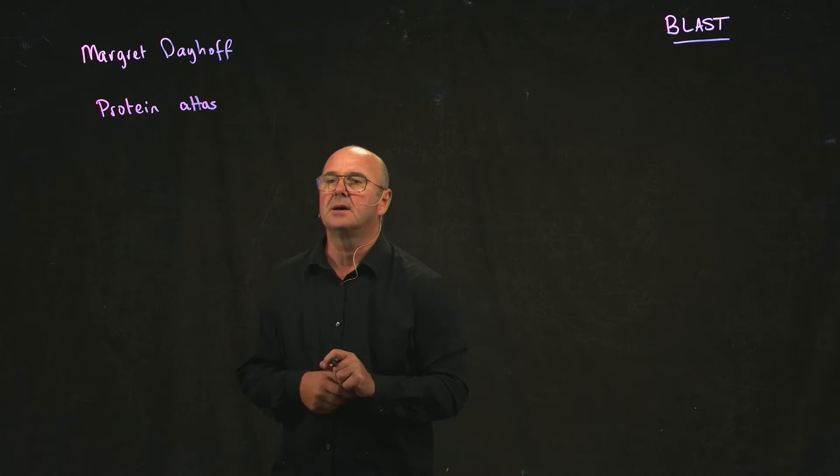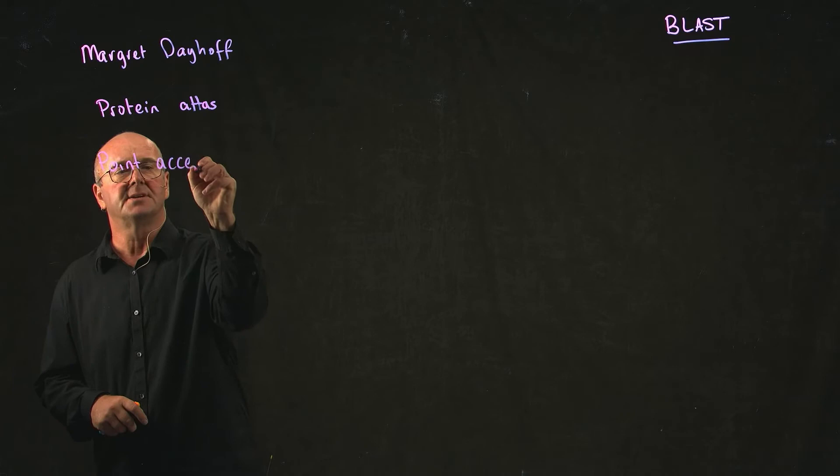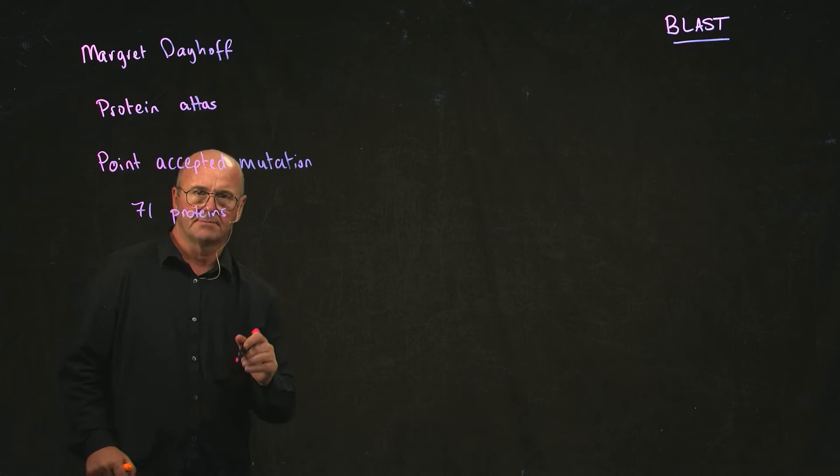In fact, the very first version of what Margaret Dayhoff eventually developed into being what's called the point accepted mutation rate started with about 71 different protein families.